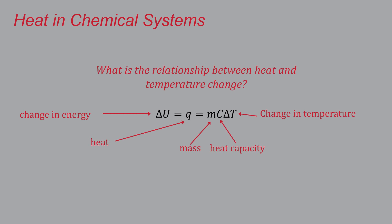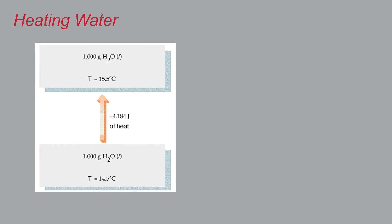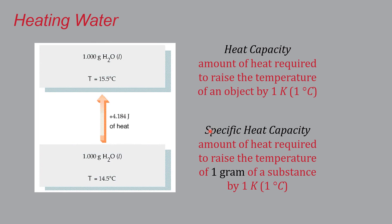All right, so let's talk about the process. Consider we know that if you take one gram of liquid water at let's say 14.5 degrees Celsius, if you apply exactly 4.184 joules of heat, then the result will be one gram of water at 15.5 degrees Celsius. So what we're actually talking about here is a specific heat capacity, and that is simply the amount of heat required to raise the temperature of one gram of one substance by one degree Celsius, also by one Kelvin.